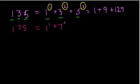1 to the 1st power plus 7 to the 2nd power plus 5 to the 3rd power. That equals 1 plus 49 plus 125, and that is 175. Amazing!